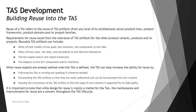These four points cover different aspects of TAS — one is from the resources, one from the executions, one from the reporting part, and the next from the API. Similarly, while reuse aspects are already settled when the TAA is defined, the TAS can help increase the ability for reuse. During the TAA itself, the TAS has been clearly identified.